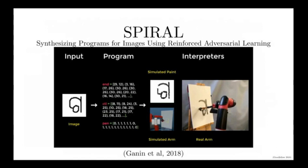For example, the discriminator from generative adversarial networks can be used as a reward function for reinforcement learning algorithms. Here, Jaroslav Ganin and his collaborators at DeepMind actually trained a robot to paint — to reproduce images — where it receives a digital input containing the image to be drawn, and it actually paints on a real physical canvas and draws the same image.